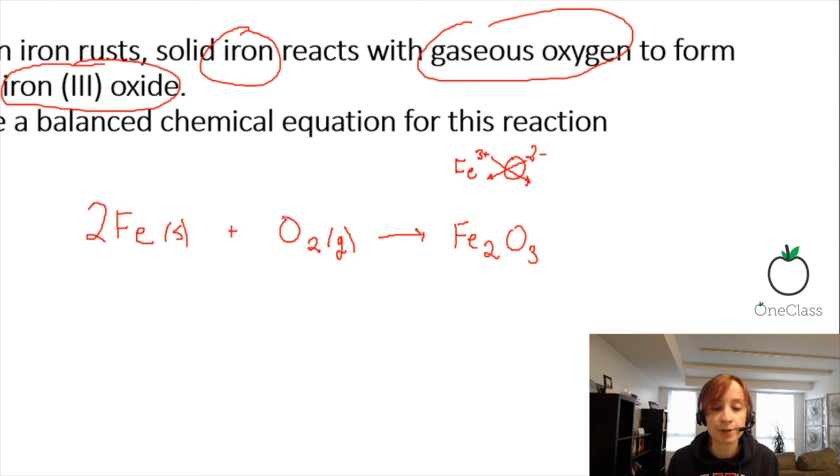But now we have 2 oxygens and 3 oxygens on reactants versus products. So that means we're going to have to multiply by a common number between the two to end up with equivalents on each side. So here we will multiply it by 2, so that will give 2 times 3 gives 6. So if we want 6 oxygens on the reactant side, we will multiply it by 3.